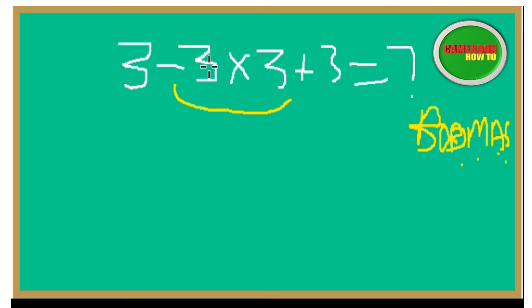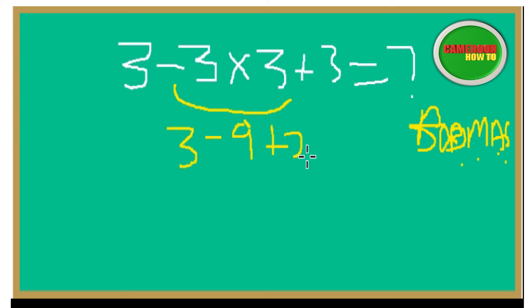If you multiply negative 3 times 3 you have negative 9. Bringing down the first 3 and the last 3, the expression now becomes 3 minus 9 plus 3.